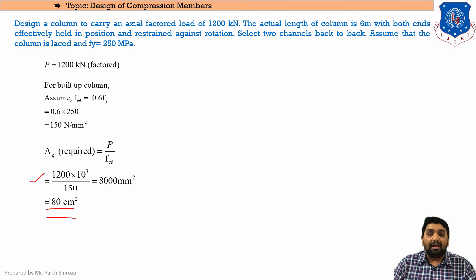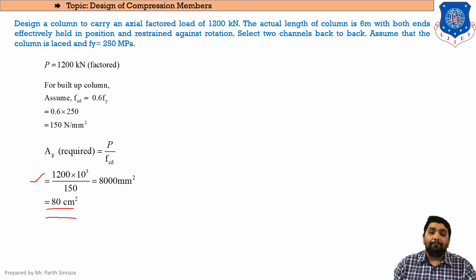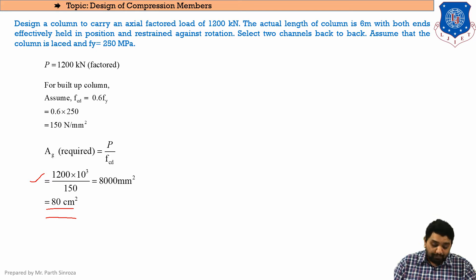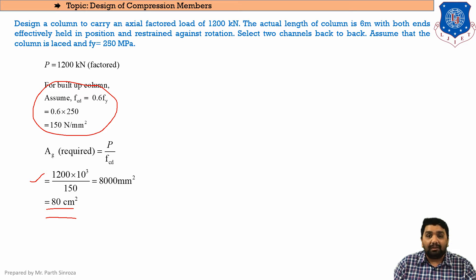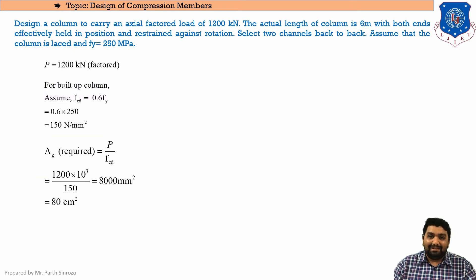We now refer to the steel table to select two back-to-back channels with area around 80 cm². Unlike the I section, you are not compelled to select an area greater than 80 cm² — a slightly lower value is acceptable because we already assumed the maximum FCD limit, so the section will not fail.